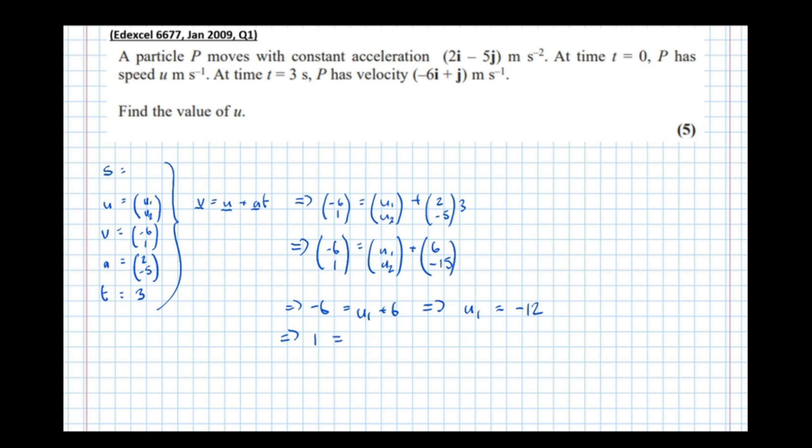Similarly for u₂, from the bottom line we get 1 = u₂ - 15, which means u₂ = 16.